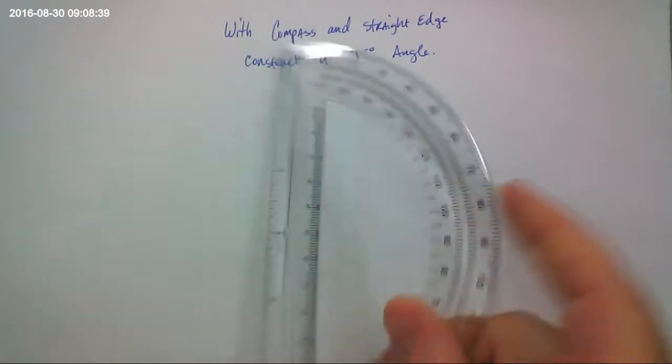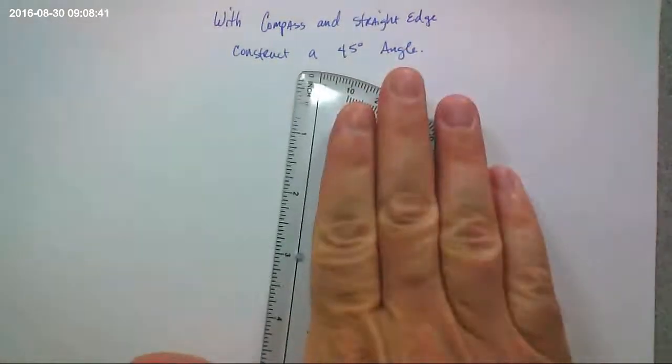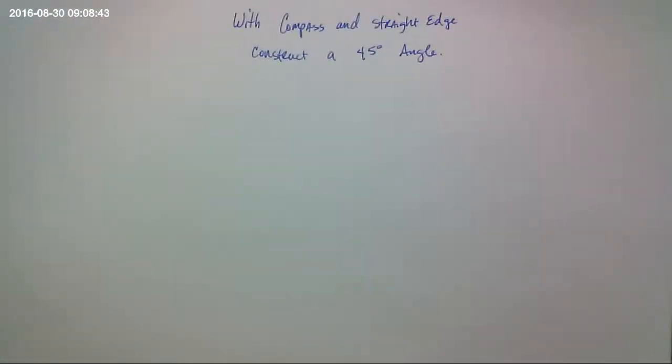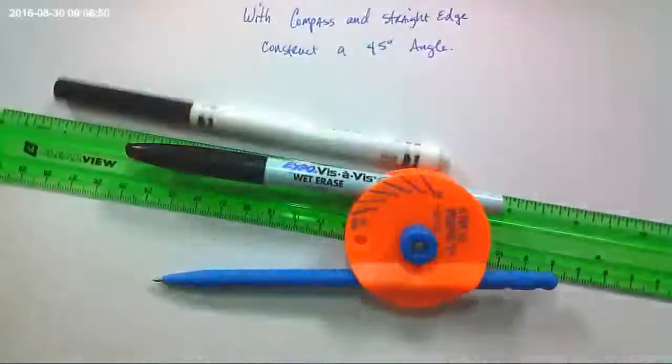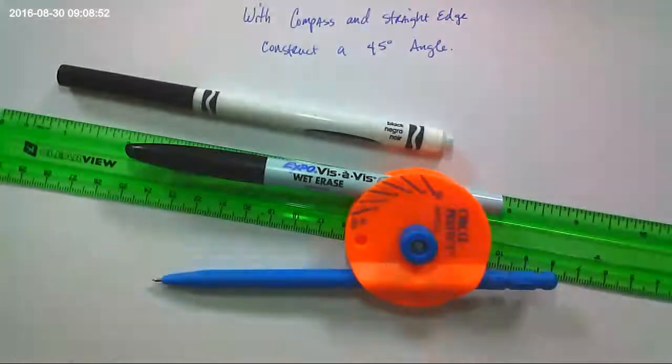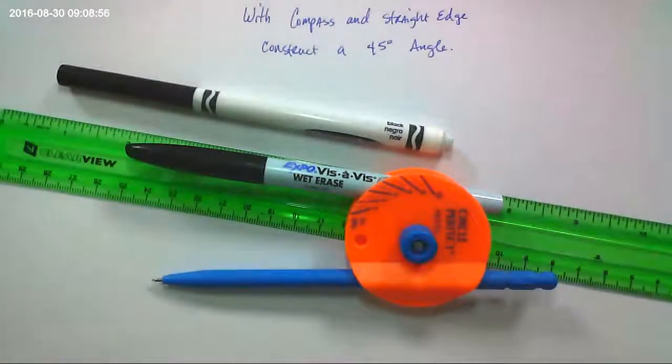So we're going to use that. Well, just the straight edge part. So I'm going to put that away so I'm not even tempted. I'm going to use this and this and this. Actually, I'm going to use this instead of that to make a 45 degree angle. Let's see here.